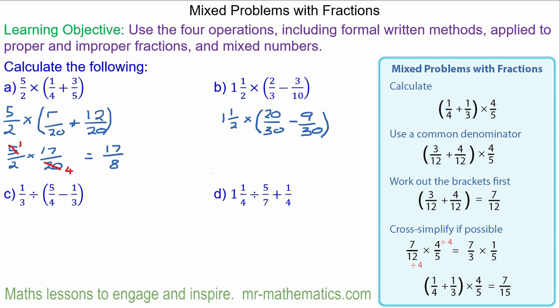Now we'll convert the mixed number to an improper fraction which is three halves. And we'll multiply that by eleven thirtieths which is twenty take away nine.